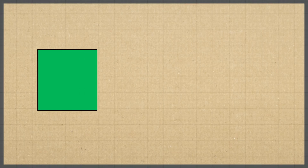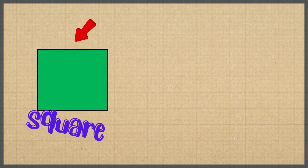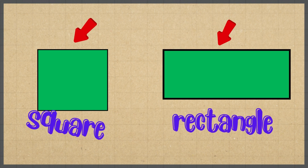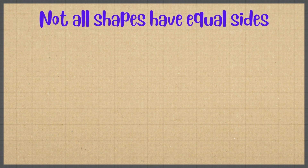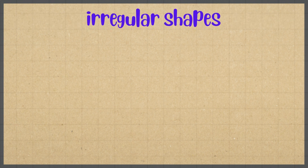Welcome back. In the last video we learned how to find the perimeter of a square and a rectangle, but not all shapes have equal sides. Today we're diving into irregular shapes.